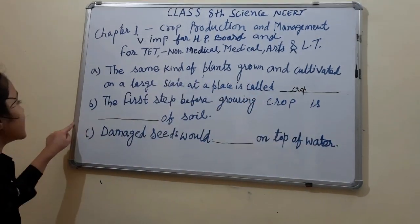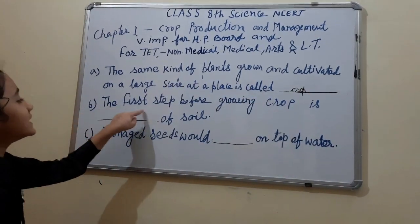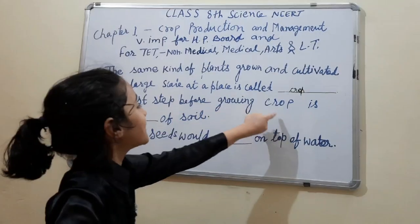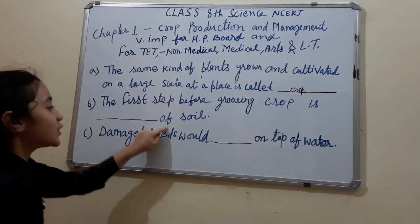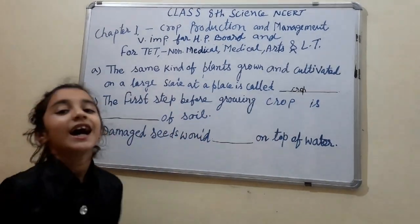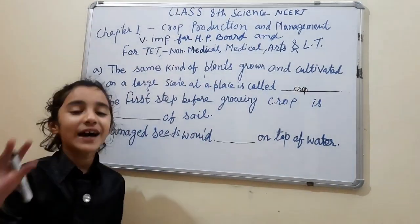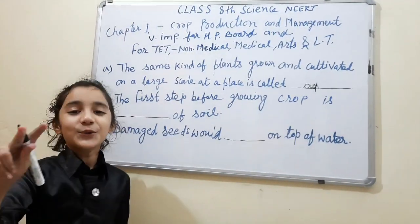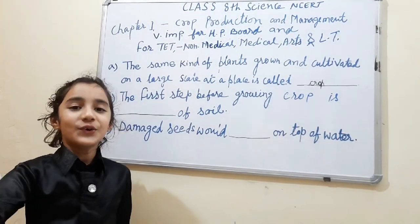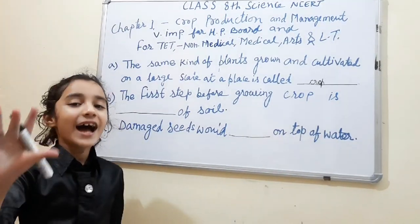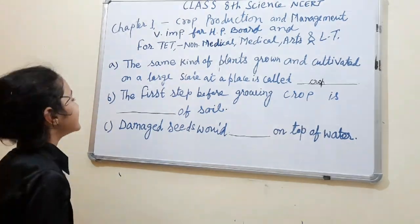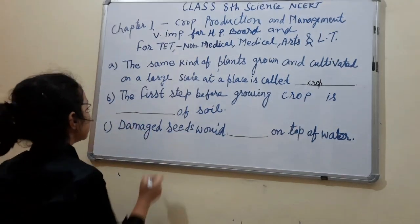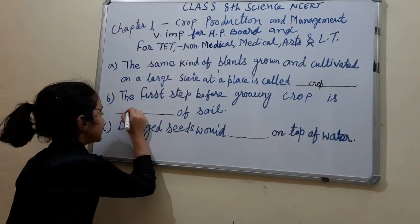Next question. The first step before growing a crop is dash of soil. I'll give you 5 seconds. 1, 2, 3, 4, 5. Your time is up. The answer to it is: preparation.